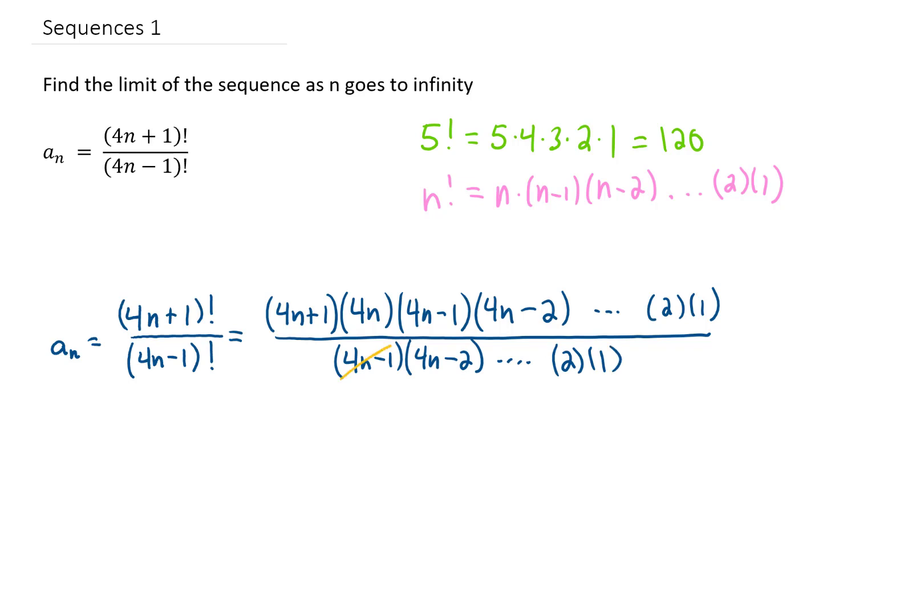And now you'll notice that a lot of cancellation happens. In fact, every single term cancels, except for the 4n plus 1 and the 4n in the numerator. So our sequence a sub n simplifies to 4n plus 1 times 4n.